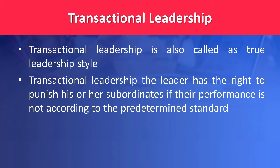In transactional leadership, the leader has the right to punish subordinates if their performance is not according to predetermined standards. They can reduce wages, deduct leaves, or punish by other means if the subordinate's performance is not up to standard. The predetermined standard defines the quality of output expected, which if not met, results in punishment.